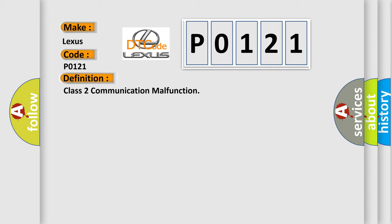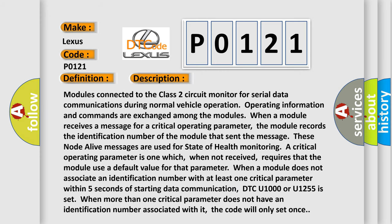And now this is a short description of this DTC code. Modules connected to the Class 2 circuit monitor for serial data communications during normal vehicle operation. Operating information and commands are exchanged among the modules. When a module receives a message for a critical operating parameter, the module records the identification number of the module that sent the message.